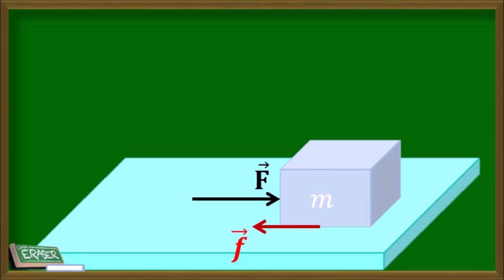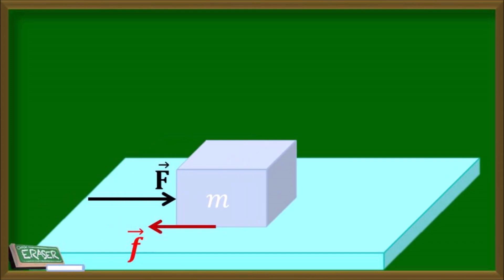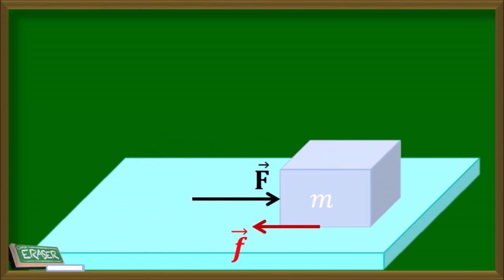Frictional force always acts in a direction opposite to the applied force or the direction of motion. This means that it tries to prevent or slow down the motion of an object.